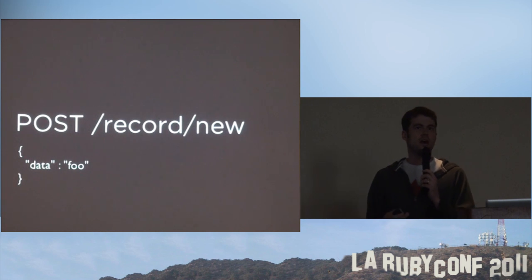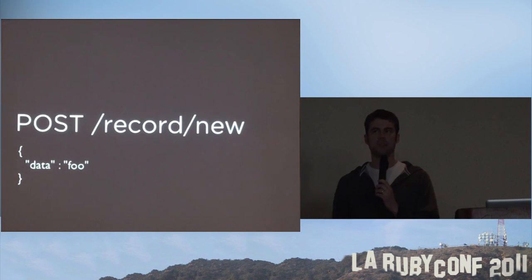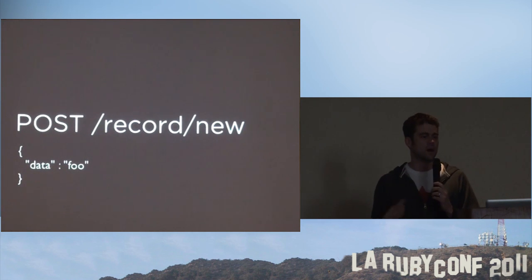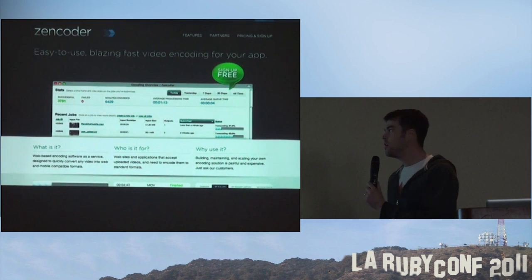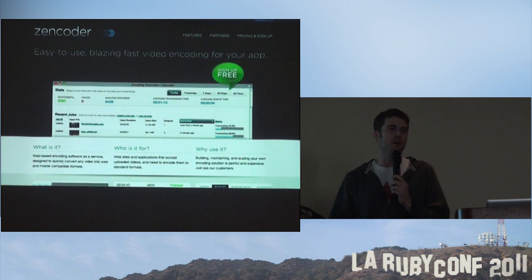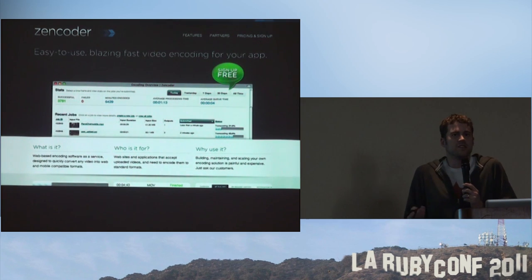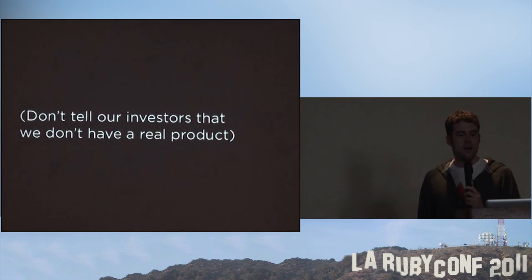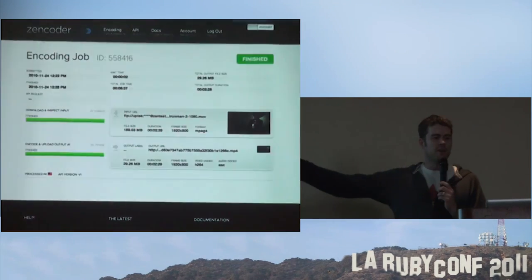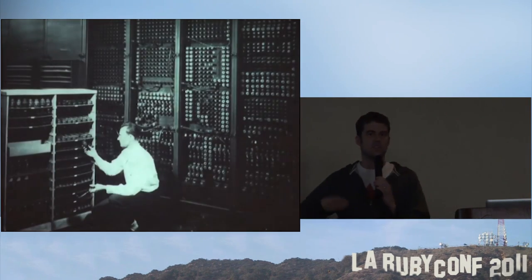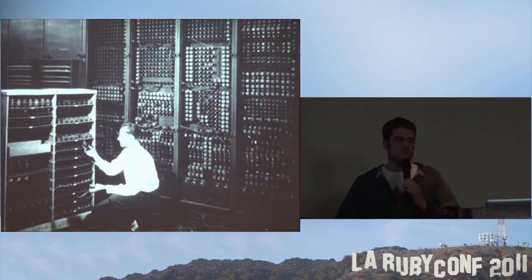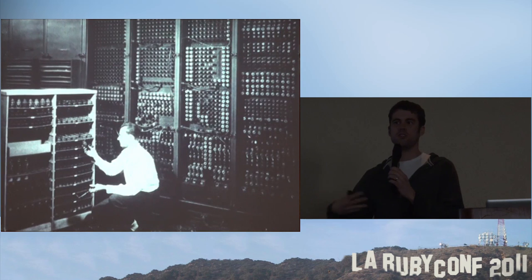Now let's talk about some more interesting things. I want to start autobiographically. I'm a co-founder of a startup called Zencoder — we are basically an API to a high-performance video encoding farm in the cloud. Our whole product is an API. We have a user interface, but you wouldn't pay us money for access to our user interface. All you know is whether or not we respond properly to API requests.